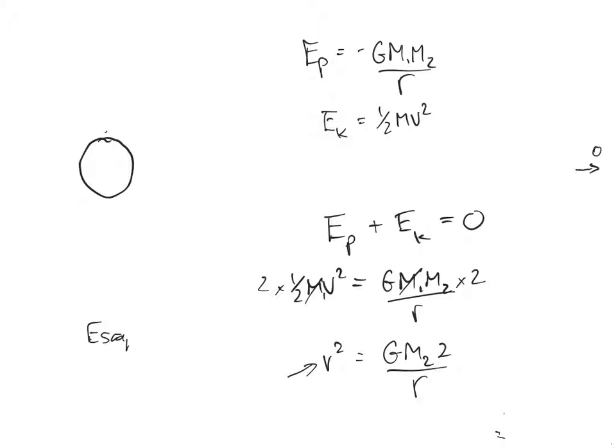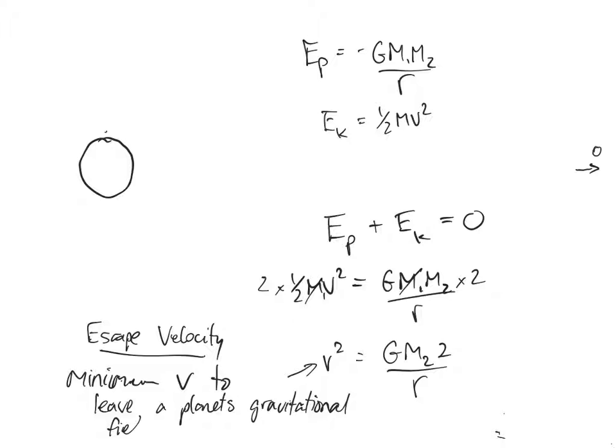So it's called the escape velocity. And it's the minimum velocity required to leave a planet's or a sun's or an object's gravitational influence or gravitational field. So you could be more than that and you'll leave, but if you're less than that velocity, you can't leave. You'll crash back to the planet or you'll go into orbit and then eventually crash back to it.